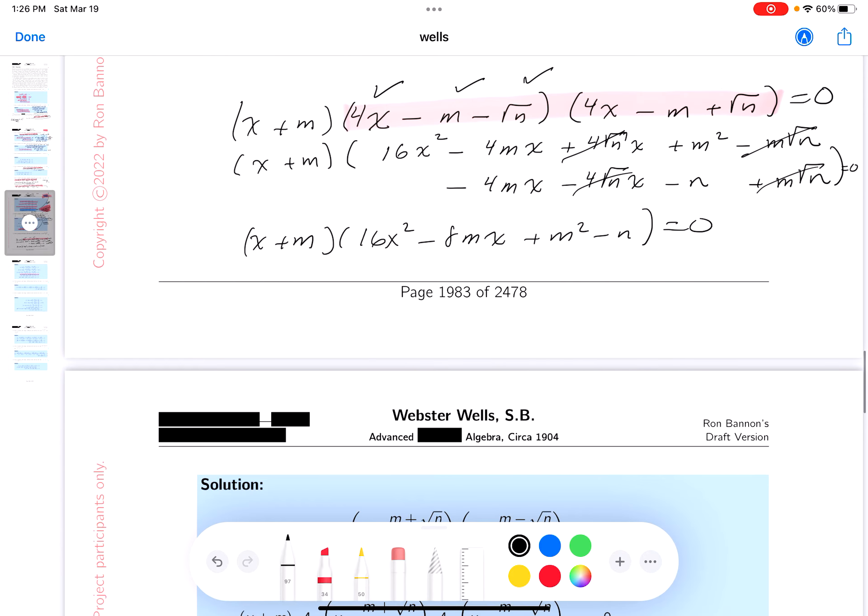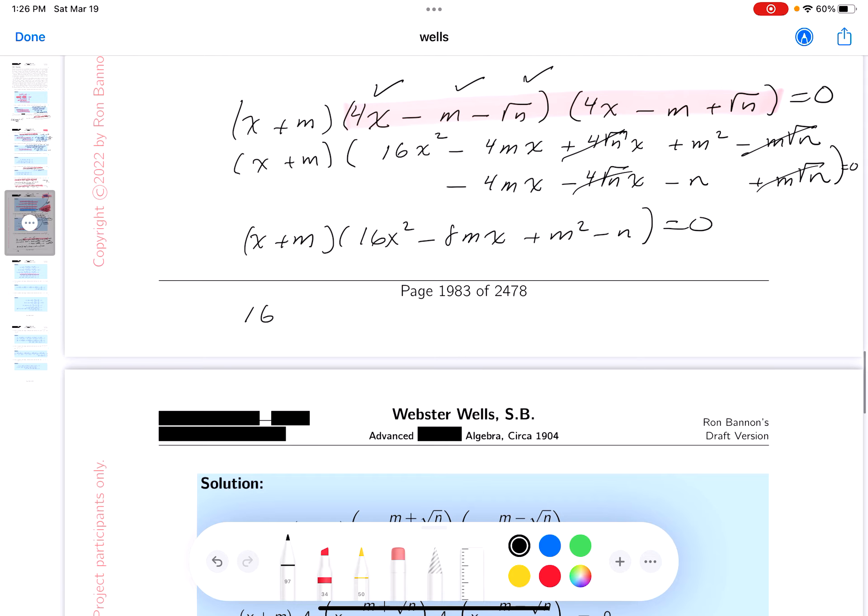Well, I got some more multiplication to look at later. But I'm moving forward. And what do you get over here? 16. Oh, by the way, I'm distributing across by x now. x cubed. Minus 8m x squared. Plus m squared x. Minus n x.